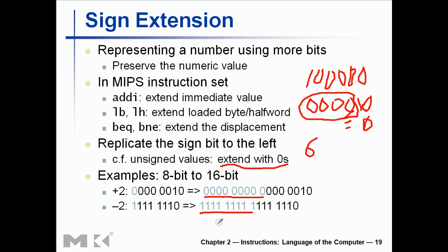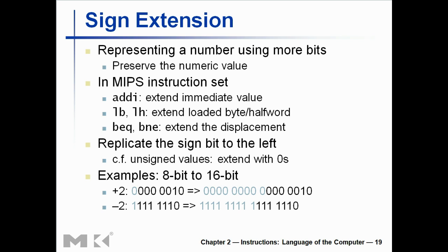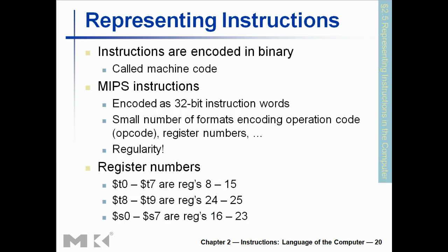What you need to know: addi adds a constant. LB is load byte, LH is load half word — we'll talk about that. BEQ and BNE are branch equal and branch not equal — we'll also talk about those in this video.